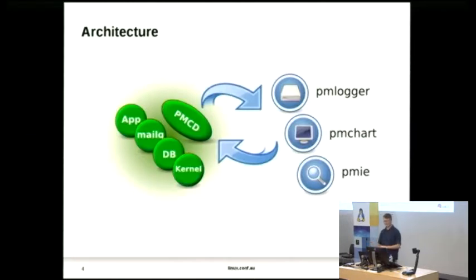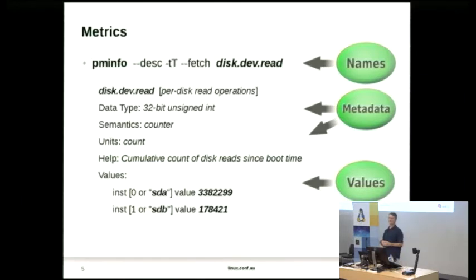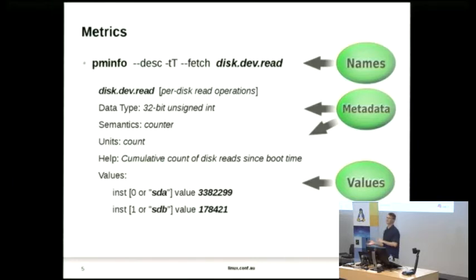The architecture has a collector system — any system you want to analyse — running the main daemon PMCD, with plug-in components that provide performance metrics for anything you can measure. Then you have monitoring tools, which are client tools that report, record, chart, or analyse that data. There's a very strong separation in PCP between the monitor and collector concept. Metrics are extremely well defined — you know everything there is to know about a metric, and that well-defined separation between client and server is key.